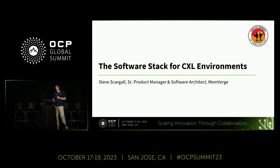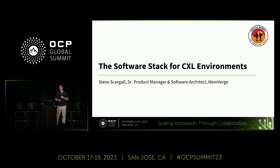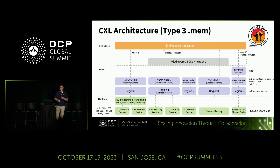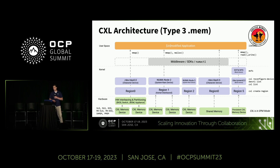I want to talk more on the software ecosystem — where we are today, a little bit of where we're going, some of the innovation in the space, and some of what we're working on right now. We'll talk a little bit about the architecture. I'm going to focus mostly on Linux and focus mostly on the Type 3 memory expansion device, although a lot of this will also transition into Type 2 and eventually Type 1 work as well.